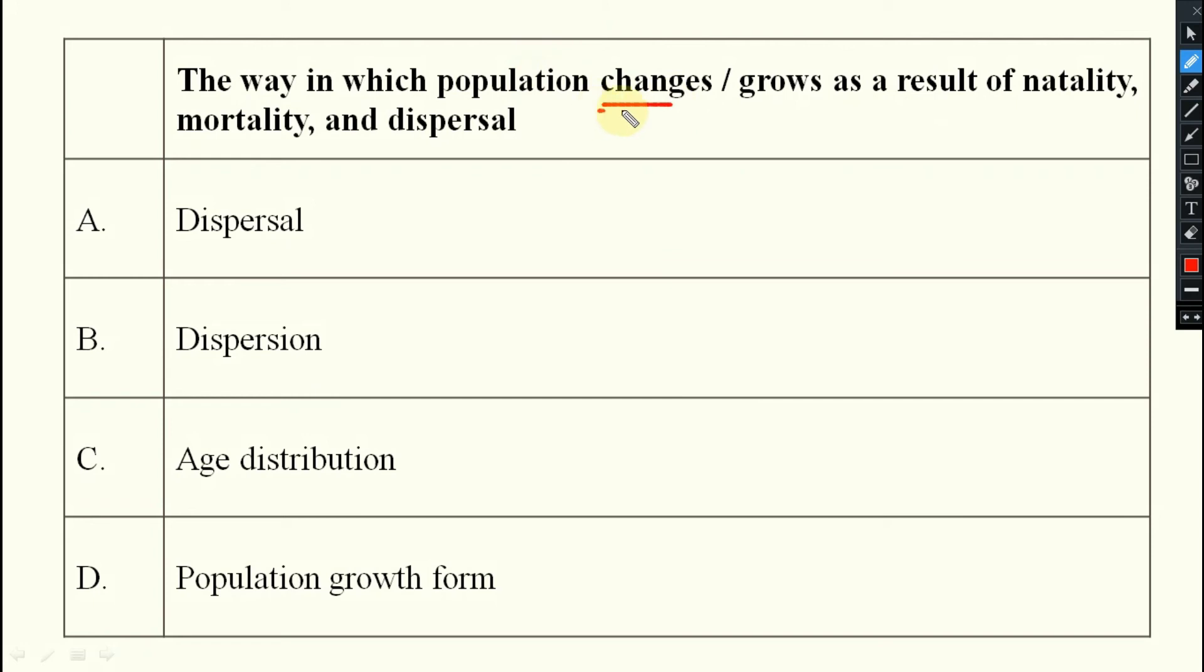The way in which population changes or grows as a result of natality, mortality, and dispersal, that is known as your population growth form.